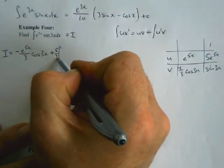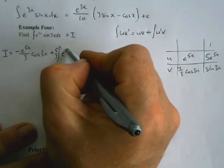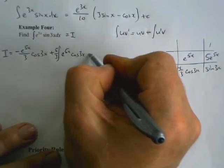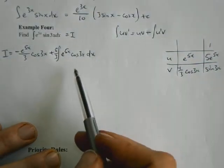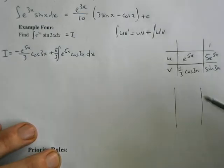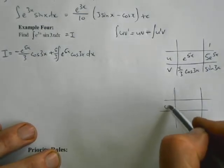That one times that one. So the negative is going to be positive. I've got 5 over 3 e to the 5x cos 3x. And to integrate this thing here, I'm going to obviously have to do it by parts again.